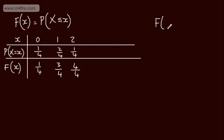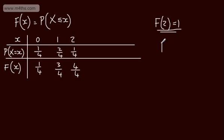So if we take our last value of x — in this particular case F of 2 — this is going to be equal to 1. When you're drawing out a cumulative distribution function, this last value must be equal to 1. For example, if we find F of 1, we simply come to here — this is saying the probability that x is 1 or less — that's going to be 3 quarters.